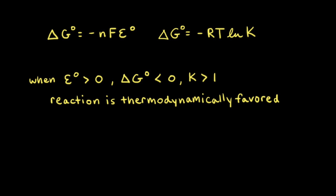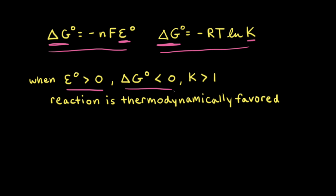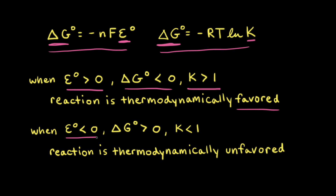To summarize: the standard potential E° and ΔG° are related by ΔG° = −nFE°, and ΔG° and K are related by ΔG° = −RT ln K. When E° > 0, ΔG° < 0 and the reaction is thermodynamically favored — at equilibrium there are more products than reactants and K > 1. When E° < 0, ΔG° > 0 and the reaction is thermodynamically unfavored — at equilibrium there are more reactants than products and K < 1.